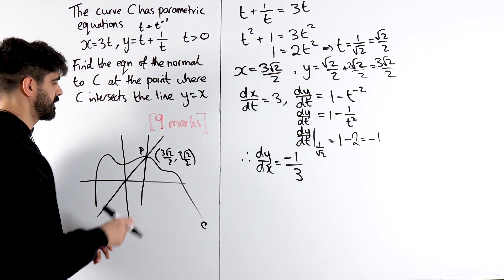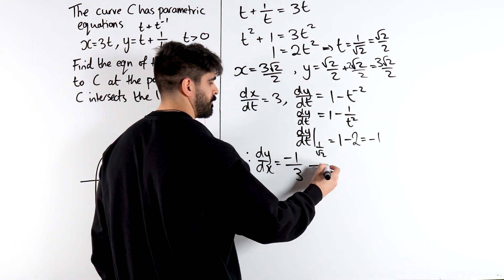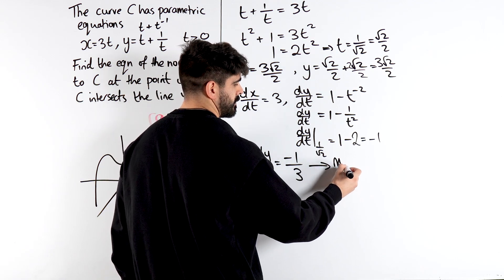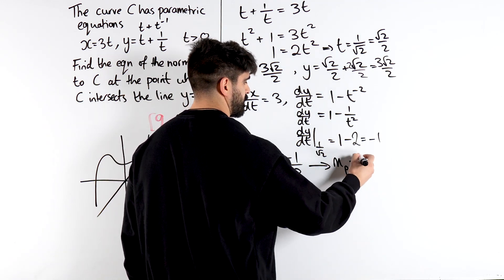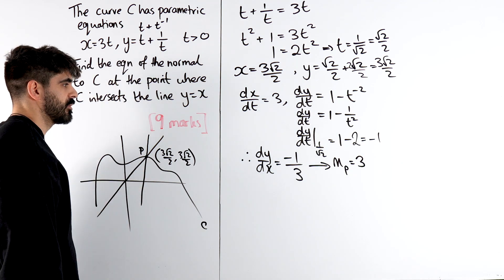But that's the gradient as if we had the tangent, so the normal is going to be the negative reciprocal. I call that m perpendicular, so the gradient perpendicular, negative reciprocal 3. To be fair, my diagram is not bad, even though I made it up on the spot.